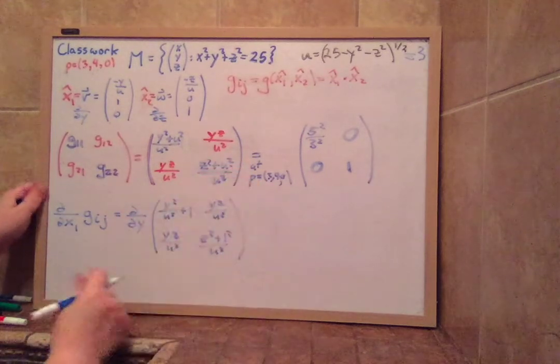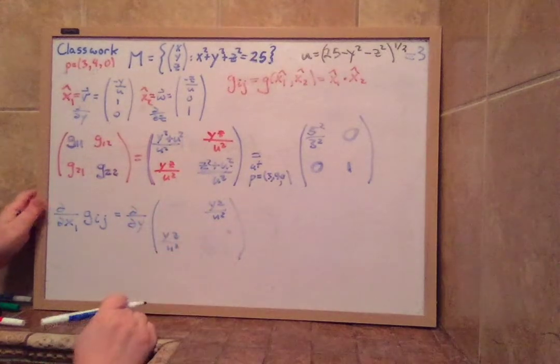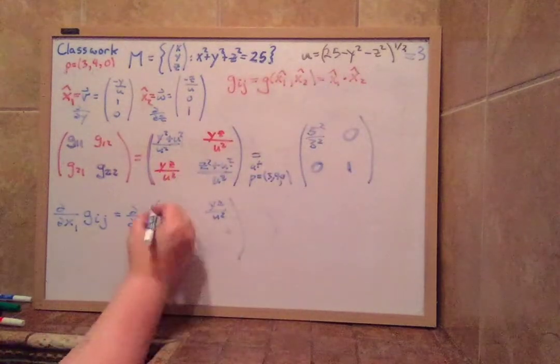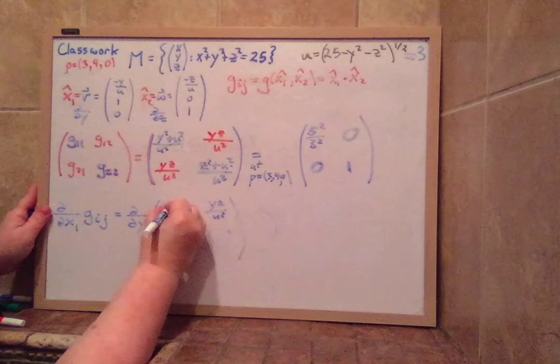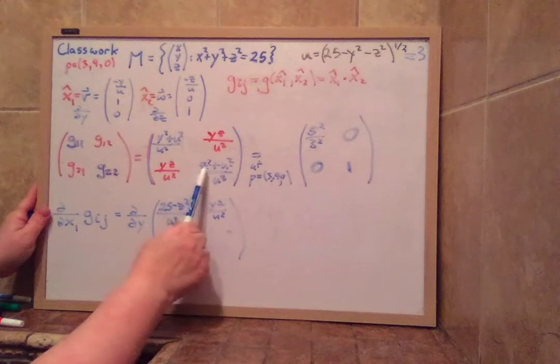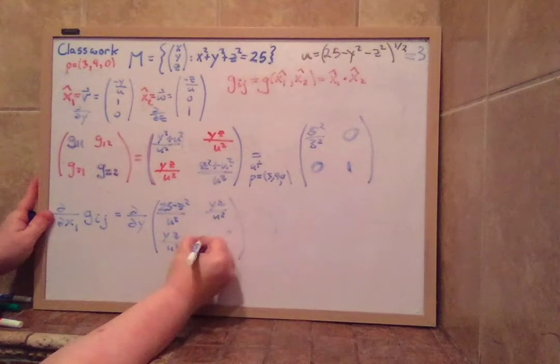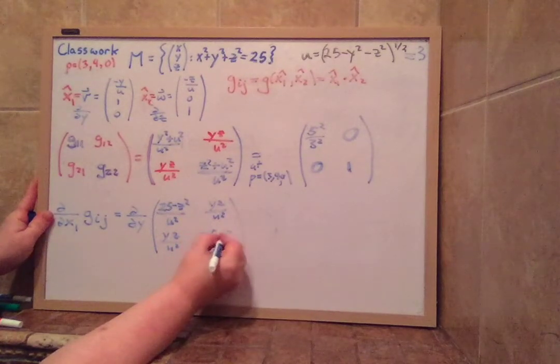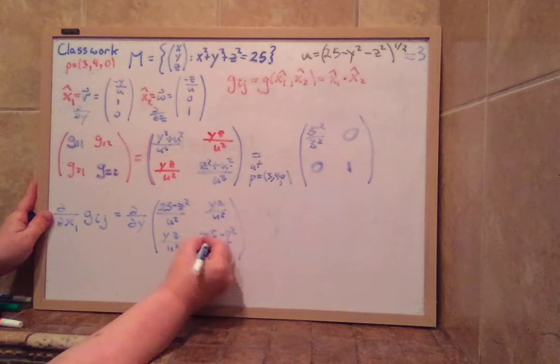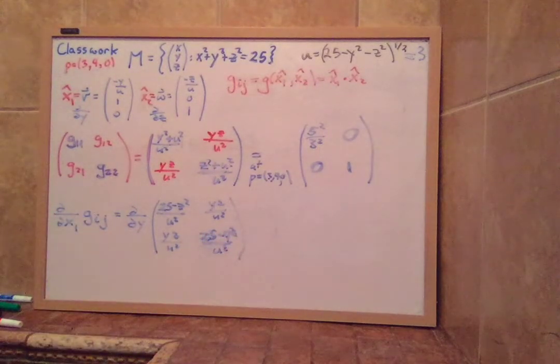And if I do that, what simplifies more on those terms is what is u squared? It's 25 minus y squared minus z squared. So if I add y squared to that, it's 25 minus z squared. So this is 25 minus z squared over u squared. And this one is u squared, which is 25 minus y squared minus z squared plus z squared. So this is 25 minus y squared over u squared. So now you have to do the computation and figure out all these derivatives, four different derivatives to figure out with respect to y.